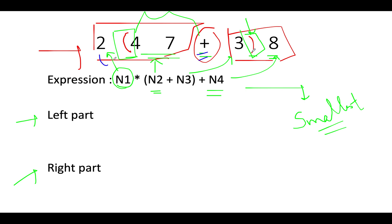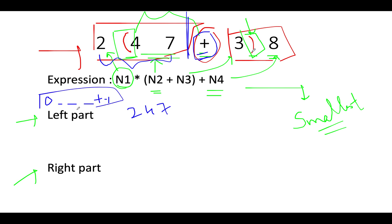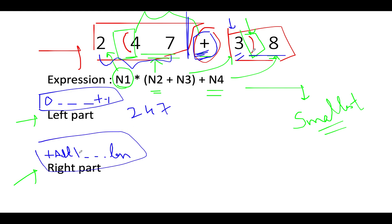The left part here is 247. To identify the termination of the left part, as soon as you see the plus sign, that corresponds to where the left string terminates. So the left part starts from the zeroth index up till the index of the plus sign minus one. The right part starts from the index of the plus sign plus one up till the end of the expression. So the left part has value 247 and the right part has value 38, and we've successfully identified both coordinates.